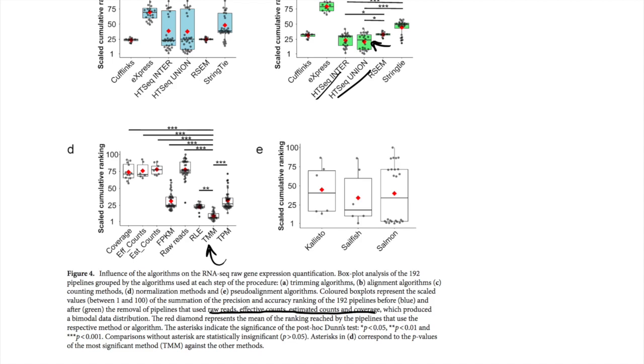And so the reason why they tried this again without, when you take out raw reads, effective counts, estimated counts, and coverage, is you can see when you look at those technologies, when you look at those rankings, those are the four that have the lowest rankings. So they took out a lot of the pipelines that were ranking really low to see among the pipelines that ranked higher in our original experiment. Can we see any patterns among those? That's the purpose of these green labeled box plot charts.